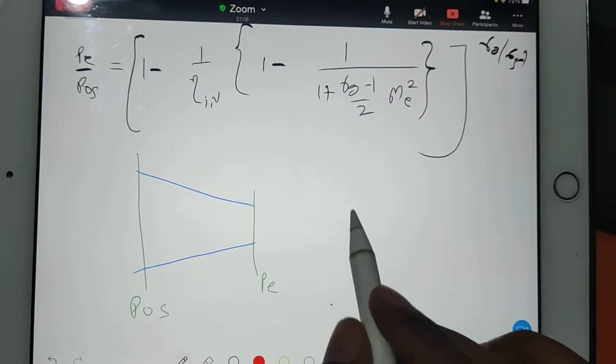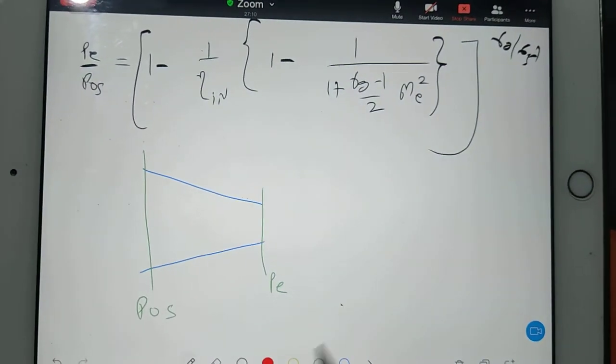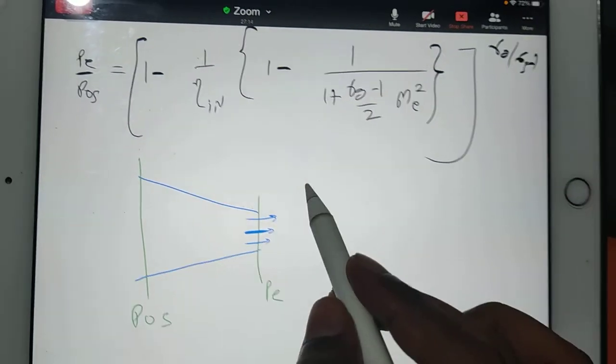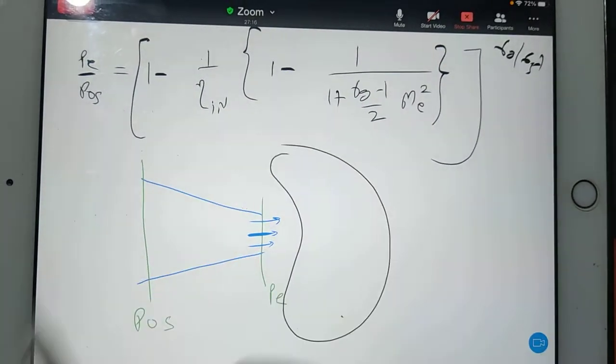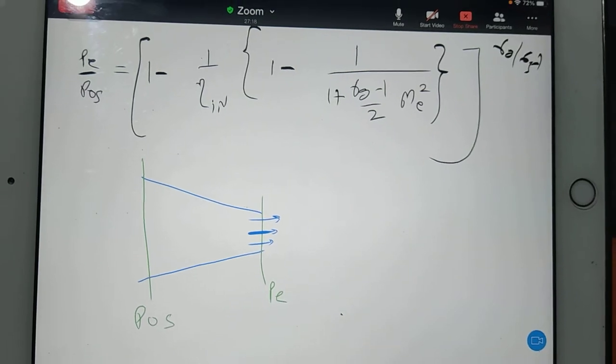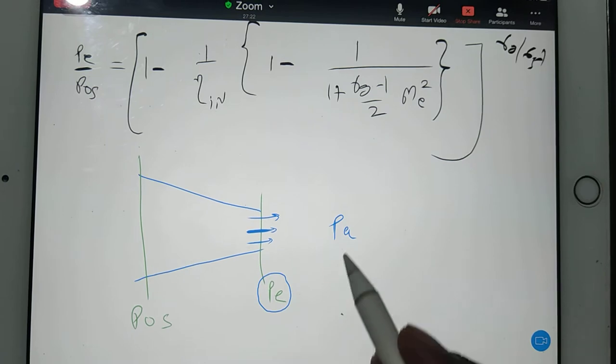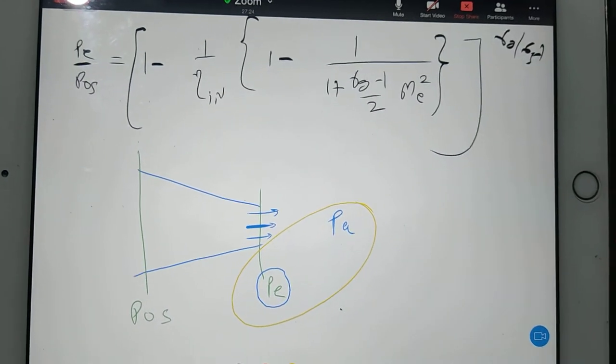First, you understand nozzle is the last element, correct? So whatever hot gases will come out of the nozzle, they will interact with the atmosphere. That's why the pe value and atmospheric value will create problems for us, as we've already discussed.